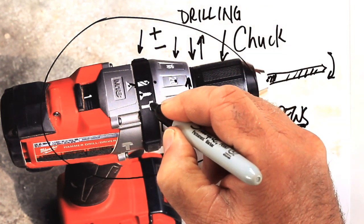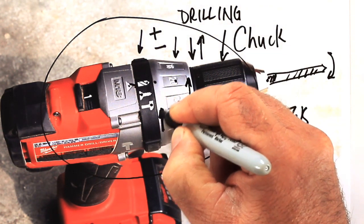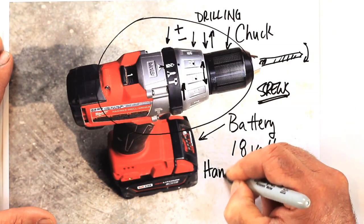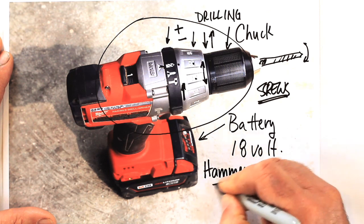Now here we've got the hammer icon. When I rotate that collar into the hammer position, so it's lined up with the triangle, it's ideal for drilling in masonry of all kinds.